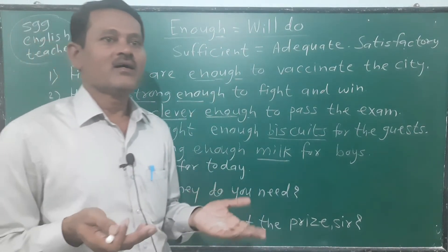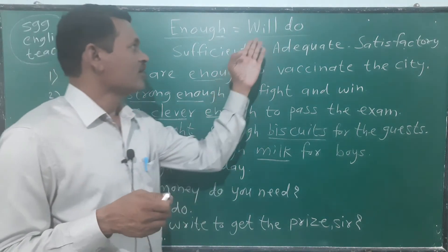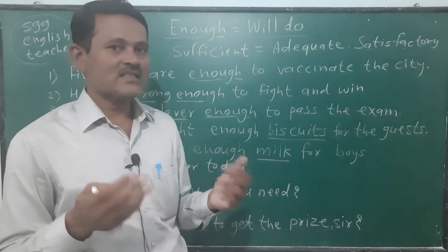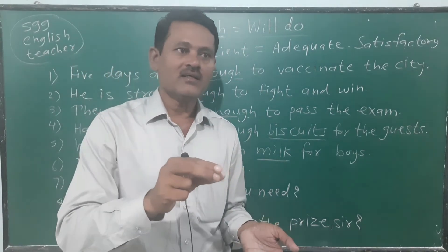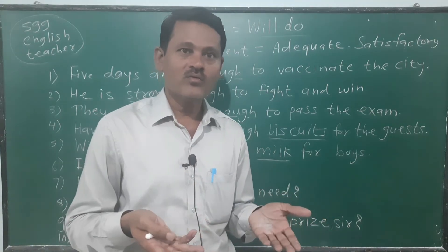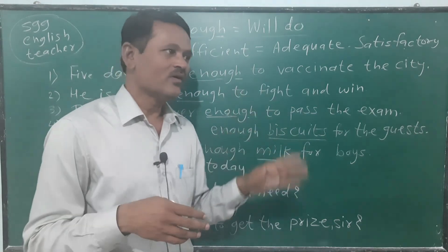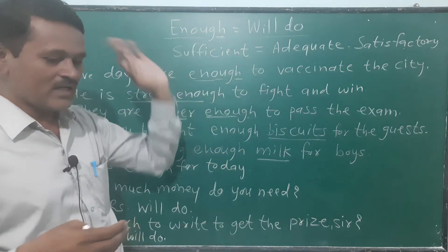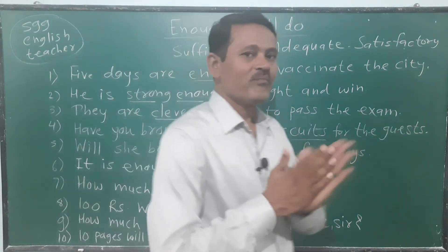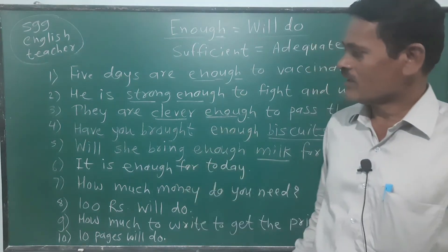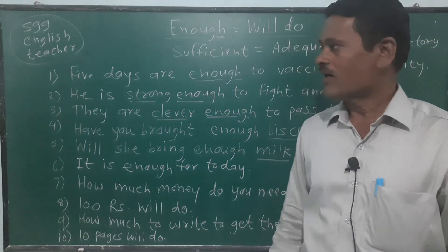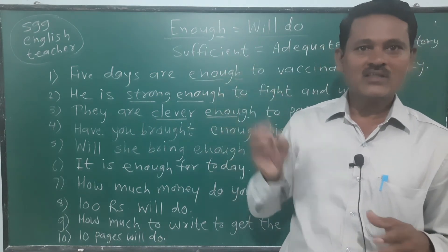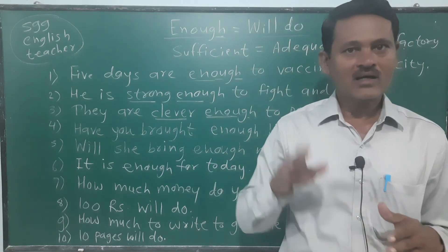How do we use will do in a question? In speaking, we say: Will it do? For example, if someone asks for 1000 rupees and you give 900, you ask: Will it do? And the reply is: Yes, it will. It will do. Will it do? Yes, it will. Till then, goodbye — have a nice day. Goodbye.